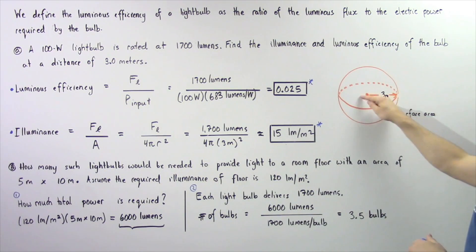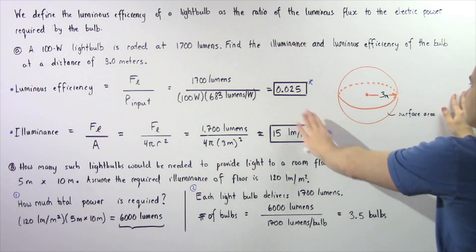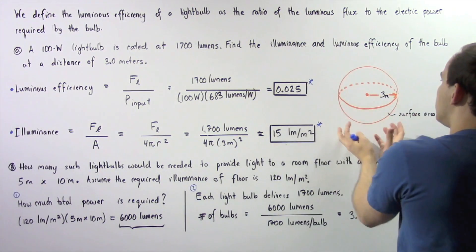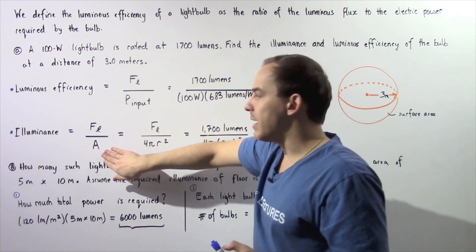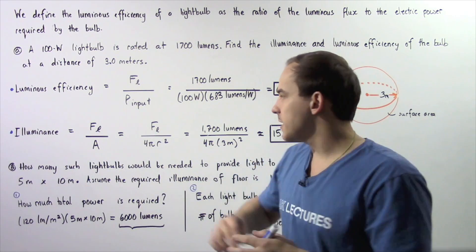So basically the surface area that we're looking at is the surface area of the sphere produced by a radius of 3 meters. This is our light bulb and we're looking at the light that falls onto the following area of a sphere found 3 meters away.